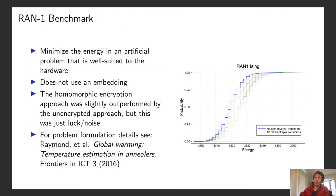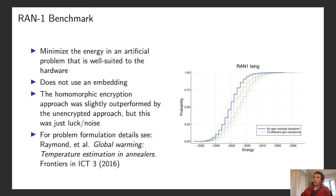The last problem is the RAM-1 benchmark, very commonly used in benchmarking D-Wave systems, where the goal is to minimize the energy in an artificial problem well suited to the hardware. Part of the reason it's well suited is that it doesn't use an embedding — this problem is native to the Chimera graph or any graph you want it to be native to. In this case, the homomorphic encryption approach was very slightly outperformed by the unencrypted approach, but again this was just noise. In fact, applying the spin reversal transformation just transforms one random RAM-1 realization into a different RAM-1 realization, so there's a good theoretical argument for why there should be no performance difference.